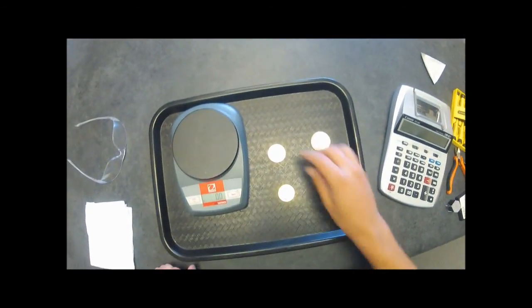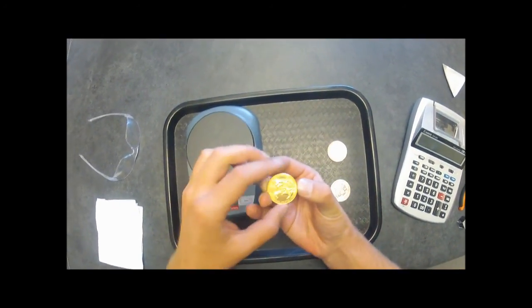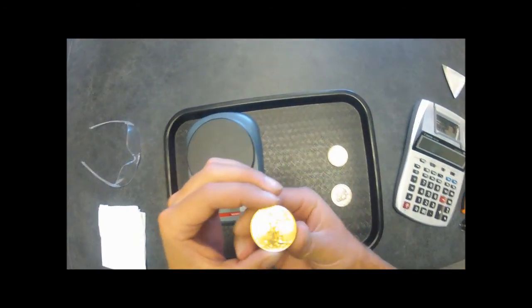As you can see there, 31.2, which is pretty typical. It'll usually weigh a little more than what it has to weigh to be an ounce. Next one we'll do is the gold eagle. It's an American minted coin.